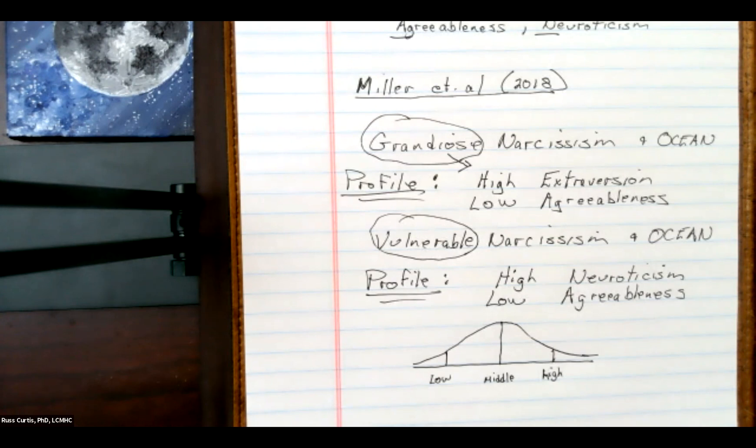So and remember, when we talk about high low, we're using the five factor model, it's kind of scored and scaled on a normal curve, meaning there will be folks lower in these attributes, people in the middle range, and then people higher.